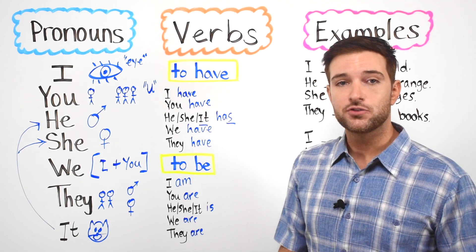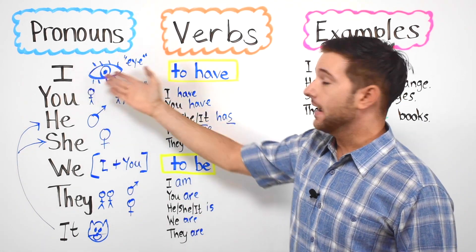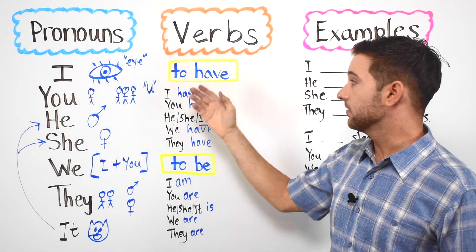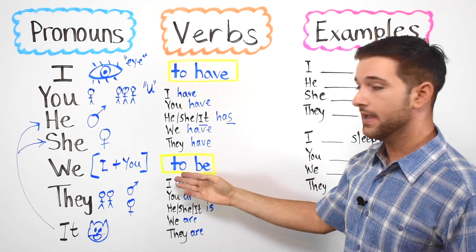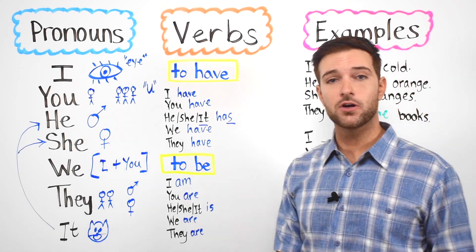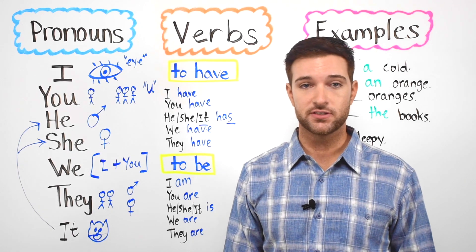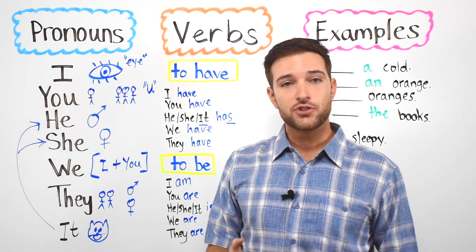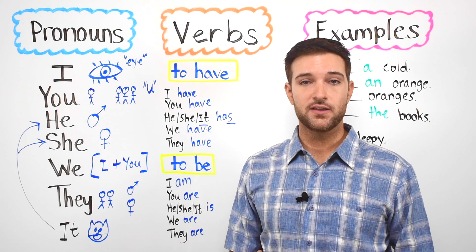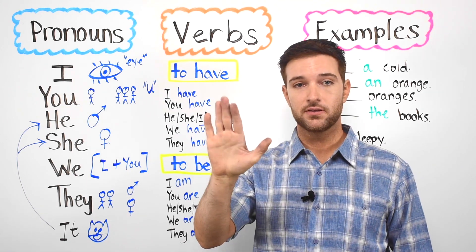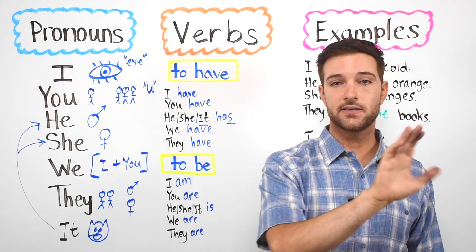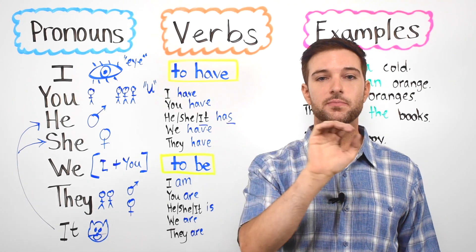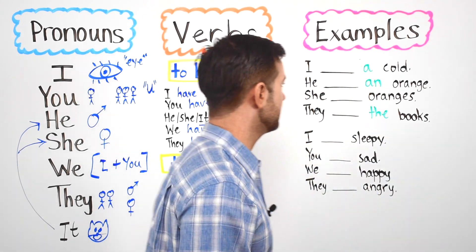Now let's make some sentences using the personal pronouns and the verbs that we just learned. The verb to have and the verb to be. And we're also going to learn some new nouns and adjectives as well. So just remember the structure for the verb to have. First you need to have a pronoun and then a verb and lastly a noun. So pronoun verb noun. Let's look at some examples.